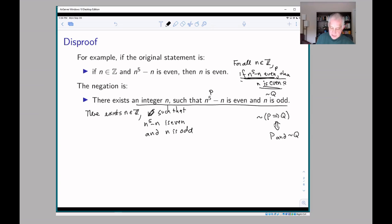If we want to disprove the original statement, we have to prove its negation, and that means we have to find an n in Z such that n to the fifth is even and n is odd.